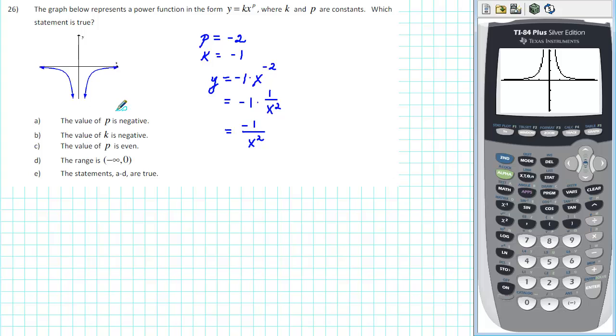So we see that it's necessary for both p and k to be negative, but does p really have to be even? Well, let's change p from an even to an odd number and see what happens. We'll go back to y equals.